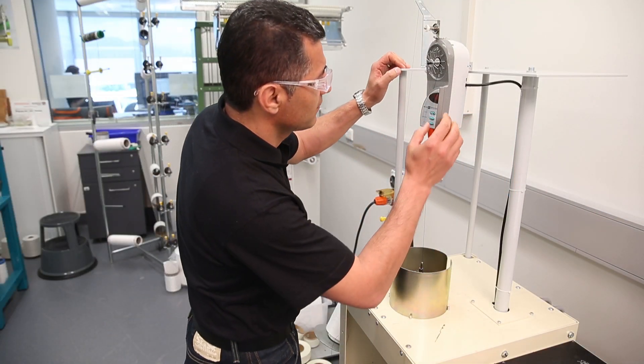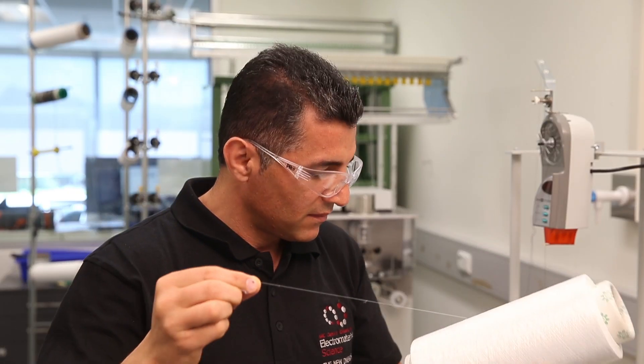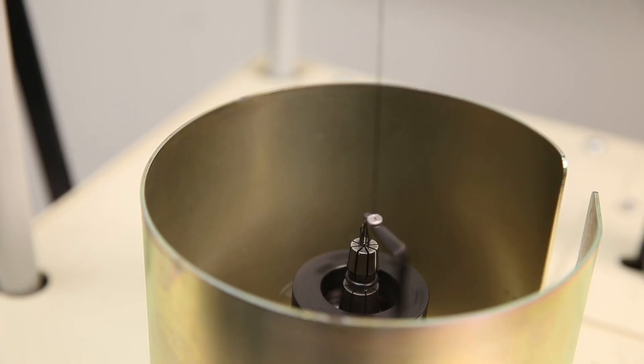Knitting and braiding are two very old and traditional manufacturing techniques. What we're finding is that as we develop highly functional fibres, we can use these old approaches to manufacturing to create revolutionary new devices.